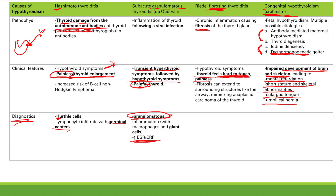To review: for adult hypothyroidism, all three causes share hypothyroid symptoms. Differentiate by: Hashimoto's — painless thyroid enlargement, Hurthle cells and germinal centers on histology; subacute granulomatous thyroiditis — transient hyperthyroid followed by hypothyroid, painful thyroid, granulomas on histology; Riedel's fibrosing thyroiditis — very hard, rock-like thyroid on exam. For congenital hypothyroidism, remember impaired thyroid function causes mental retardation, short stature, enlarged tongue, and umbilical hernia.